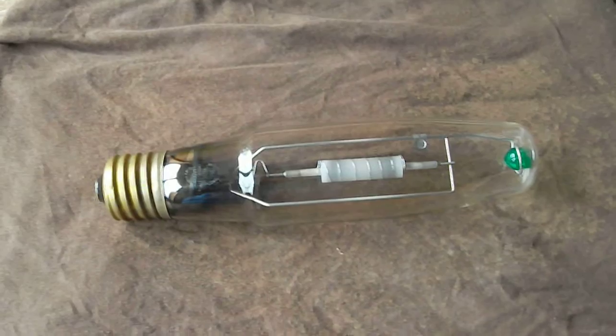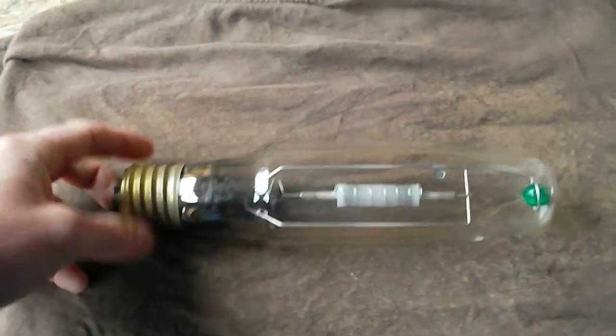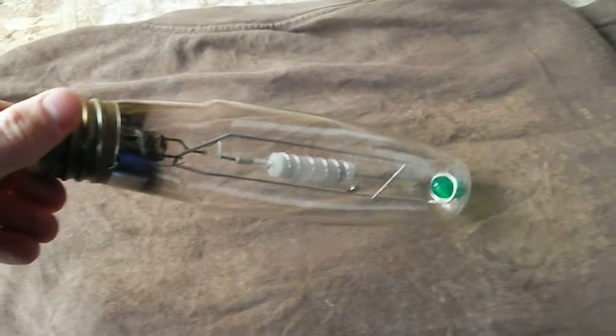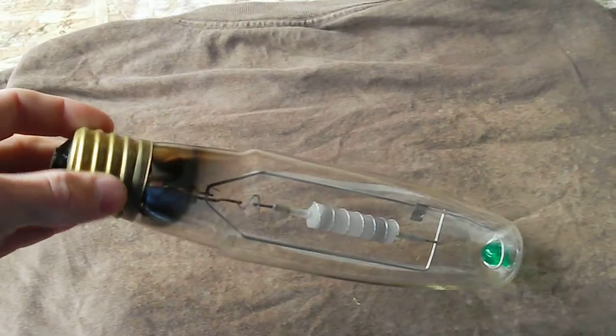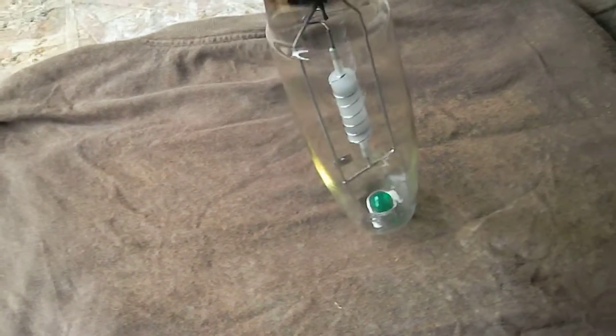This is the ceramic metal halide 400 watt vertical bulb. I was incredibly impressed with this thing, with how low the heat was that it emitted. I had my plants grow within inches of it, no problem.